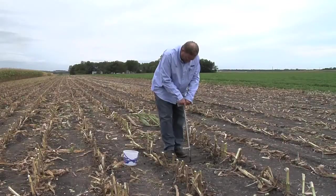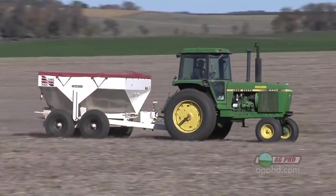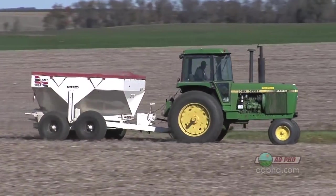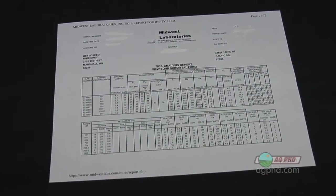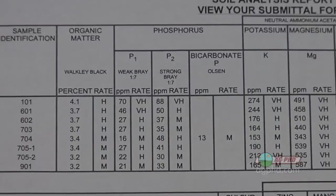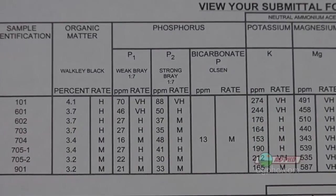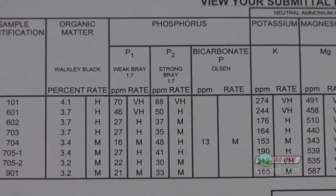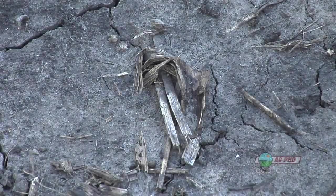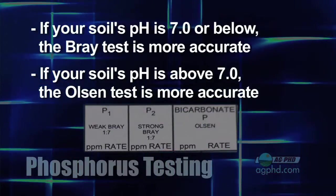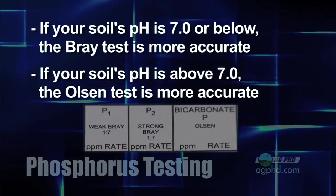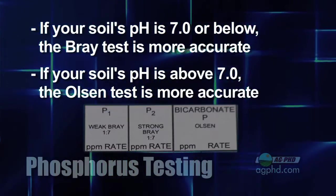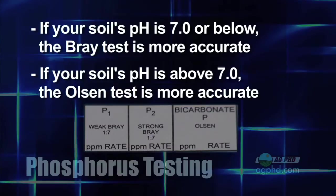I've been talking about soil testing over the last few weeks and there's one primary nutrient we still haven't talked about yet — phosphorus. On a soil test you'll find it measured several different ways. There are different tests depending on your soil pH. If you've got a soil pH below 7, the Bray test is considered more accurate, and the Olsen test is more accurate in higher pH soils.